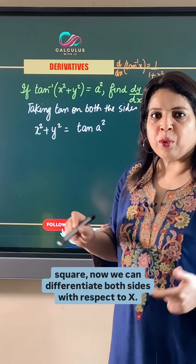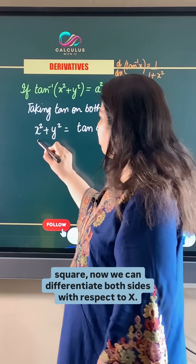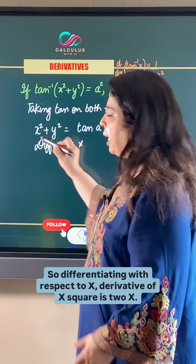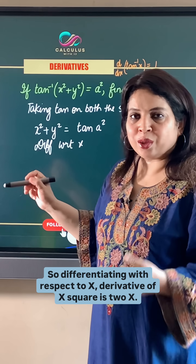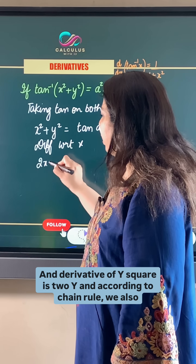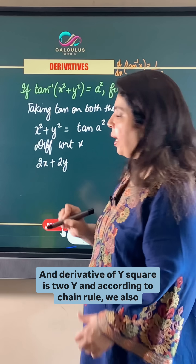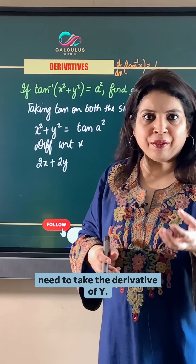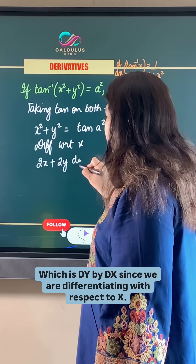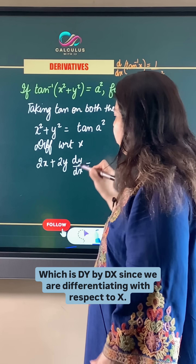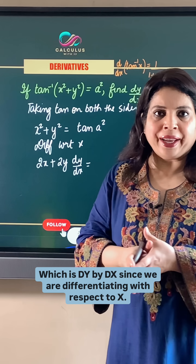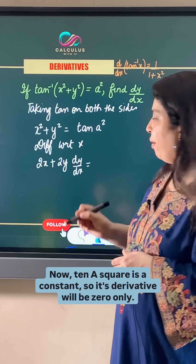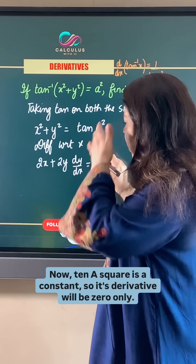Now we can differentiate both sides with respect to x. The derivative of x² is 2x, and the derivative of y² is 2y. According to the chain rule, we also need to take the derivative of y, which is dy/dx, since we are differentiating with respect to x. Now tan(a²) is a constant, so its derivative will be 0.